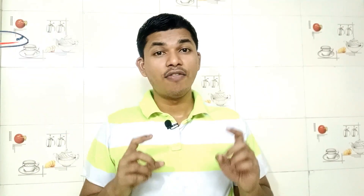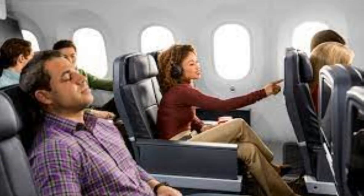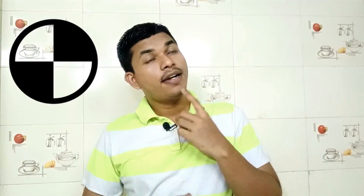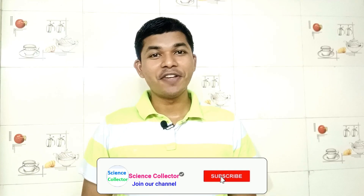Hello viewers. If we take a bike, we have a fuel tank in front of it. If we take a car, the fuel tank is present at the backside of the car. But do you think any day, where the fuel tank is stored in an aeroplane? And if the passengers sit inside the aeroplane, then actually where is the fuel tank? And whether the center of gravity has any role in deciding the location of the fuel tank in an aeroplane? Let's get into this video.